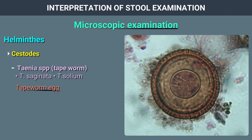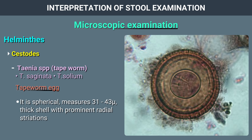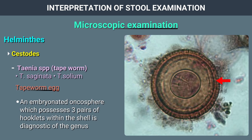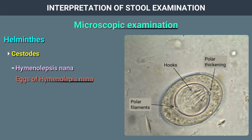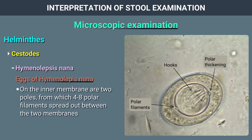Taenia species (Taenia saginata or Taenia solium): the tapeworm egg is spherical, measures 31 to 43 microns, with a thick shell with prominent radial striations. An embryonated oncosphere possessing 3 pairs of hooklets within the shell is diagnostic of the genus. H. nana: eggs of H. nana are oval, measure 30 to 50 microns. On the inner membrane are 2 poles from which 4 to 8 polar filaments spread out between the 2 membranes. The oncosphere has 6 hooks.